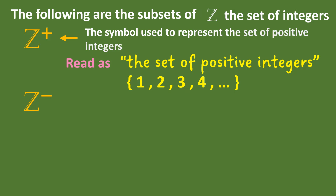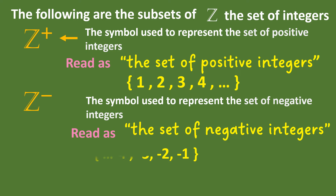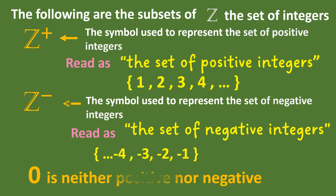The Z with a negative on the upper right is the symbol used to represent the set of negative integers, and it is read as the set of negative integers. From negative infinity up to negative 4, negative 3, negative 2, and negative 1 are examples of the set of negative integers. Note that 0 is neither positive nor negative.